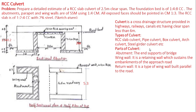RCC slab culverts are economical for spans up to about 8 meters. Bridges are provided for spans greater than 8 meters. The components of a culvert with RCC deck slab are: (a) deck slab, (b) abutments and wing walls, (c) foundations, (d) curbs and railings, etc. The width of the roadway is fixed based on the need for one-way or two-way road. The width of roadway is 4 meters for village roads in mountainous terrain.